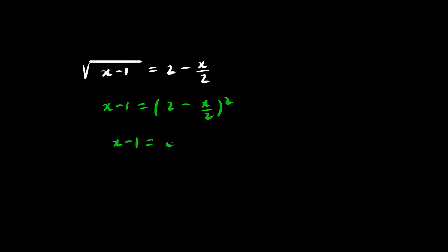Let's FOIL. First, we multiply these so we get negative x. Double it is negative 2x. And last, this times itself is positive x squared over 4.